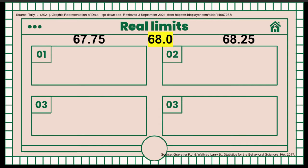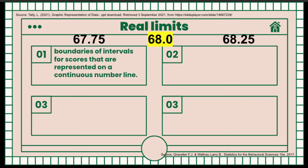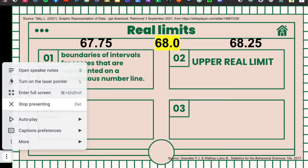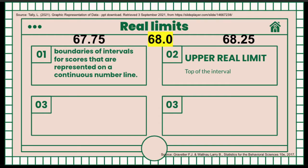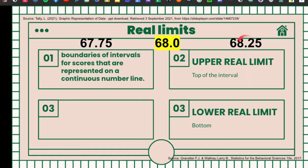When it comes to real limits, this is the boundaries of intervals for scores that are represented on a continuous number line. And it has parts. The first one is the upper limit. For the upper limit, it is the top of the interval. So here, we are seeing 67.75, 68.0, and 68.25. The upper limit is 67.75. And when we talk about the lower limit, it's the bottom portion, which is 68.25.